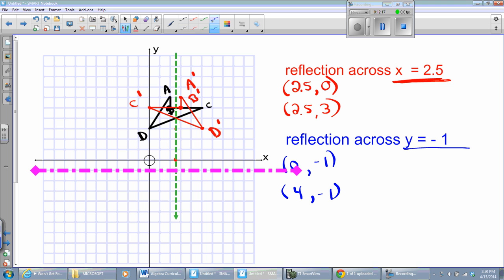D is 1, 2, 3, 4. 1, 2, 3, 4. There's the new D. A is 1, 2, 3, 4, 5, 6, 7. 1, 2, 3, 4, 5, 6, 7. B is there. One closer. A prime. Okay. B prime. C is 1, 2, 3, 4, 5, 6. 1, 2, 3, 4, 5, 6. And there is C prime.